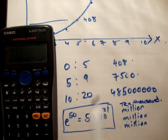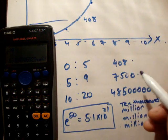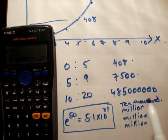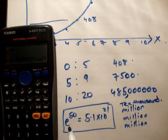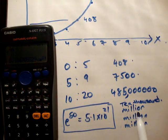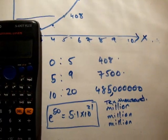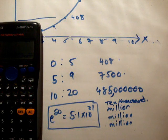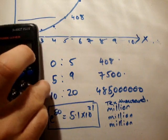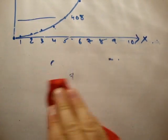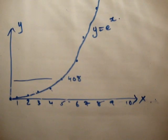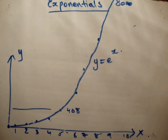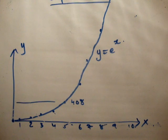So this number here is 10,000 million million million. So whereas between 0 and 5, we went up maybe to 408. 5 to 9, we went up to maybe 7,500. Between 10 and 20, we went up to about 485 million. Between 20 and 50 in the x, we went to 10,000 million million million. That is an absolutely enormous number. It's ridiculous. I can't even think of anything that could possibly be that large.